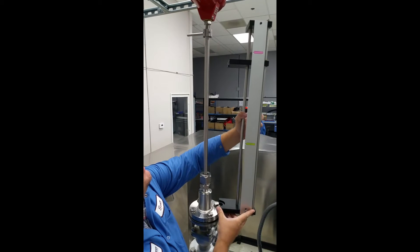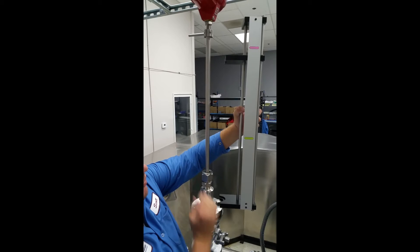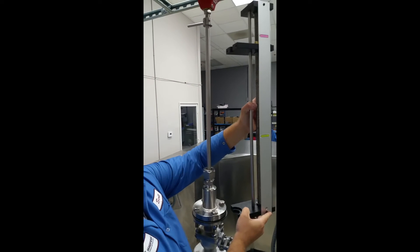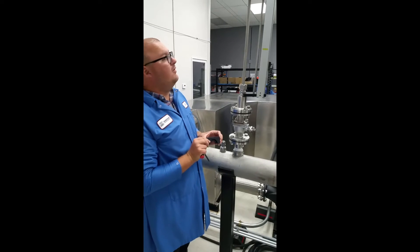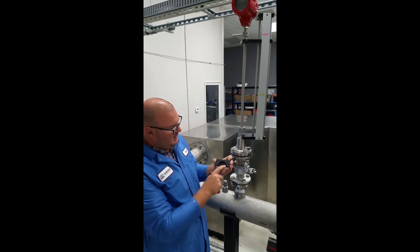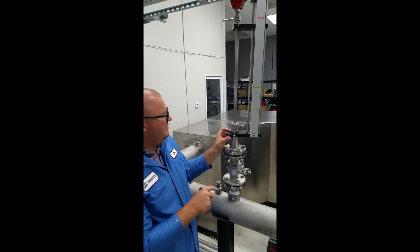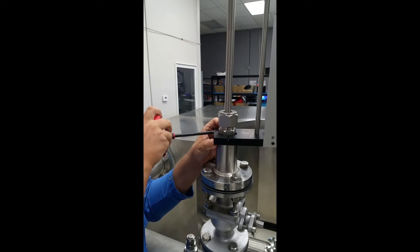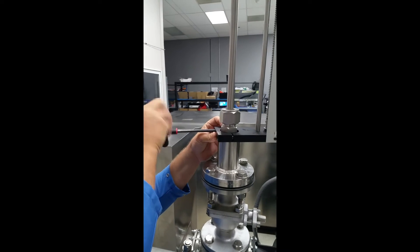The retractor is secured to the process connection and probe with these two brackets. Each one is uniquely machined so that it will only fit in one way. I've already just hand tightened the top bracket here. I'm going to install the bottom one. It has the same shelf that fits into the process connection like so. And it's important to leave the top loose for now because I'm going to have to index it in a second.